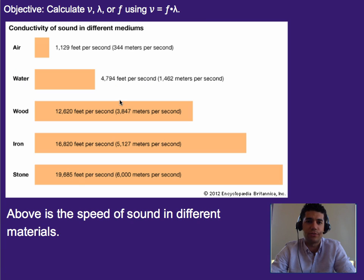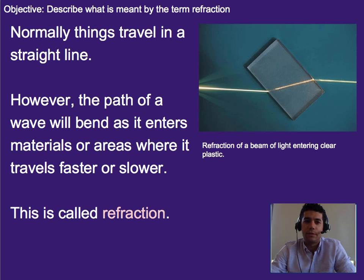Same thing goes for sound, and really this is true for any wave. So that brings us to this point, this idea that normally things travel in a straight line, meaning if we have a beam of light, it's gonna go in a straight line. It's not gonna curve and go in a different direction, it's not gonna bend or anything like that, unless it hits something.